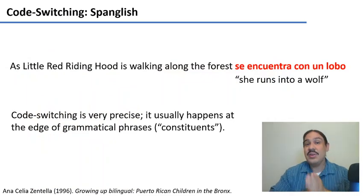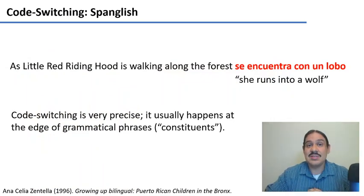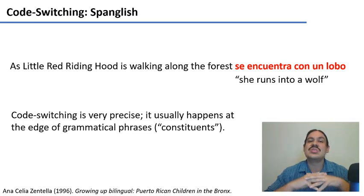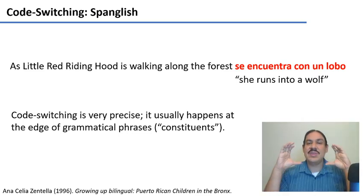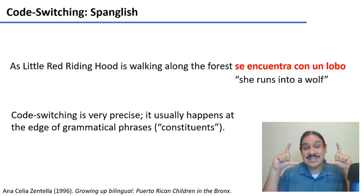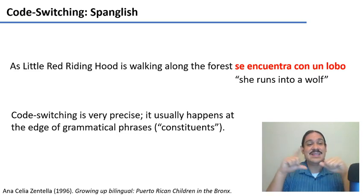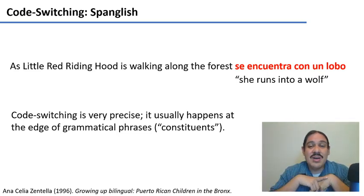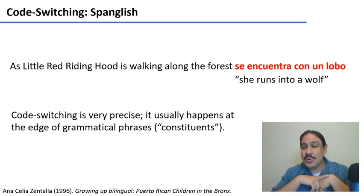There is a very common type of code switching in North America called Spanglish, which is the combination of English and Spanish. They can be combined within a single sentence, as in: 'As little Red Riding Hood is walking along the forest, se encuentra con un lobo' — meaning 'she runs into a wolf.'